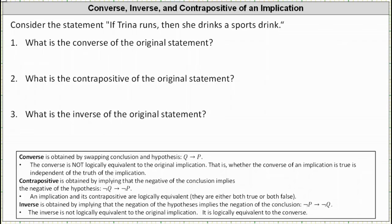Consider the statement: if Trina runs, then she drinks a sports drink. For this implication, we will assume the statement 'Trina runs' is P and 'Trina drinks a sports drink' is Q. Which means we can express the given implication as if P then Q. We are asked to find the converse, contrapositive, and inverse of the original implication.